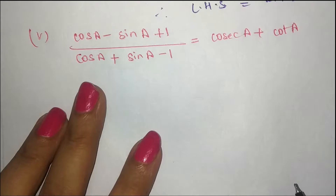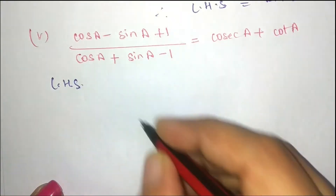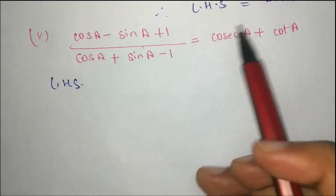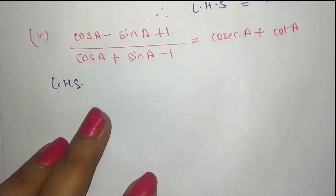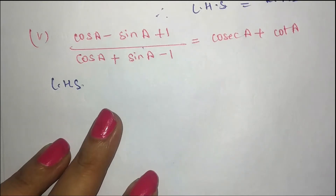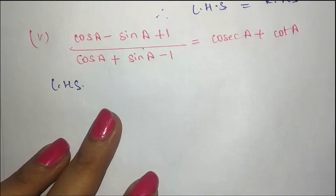Now here is our next question. We are going to work with the left hand side because we will simplify the left hand side further to reach the right hand side. We take the left hand side of (cos a minus sin a plus 1) and we have to use the identity cosec²a equal to 1 plus cot²a.